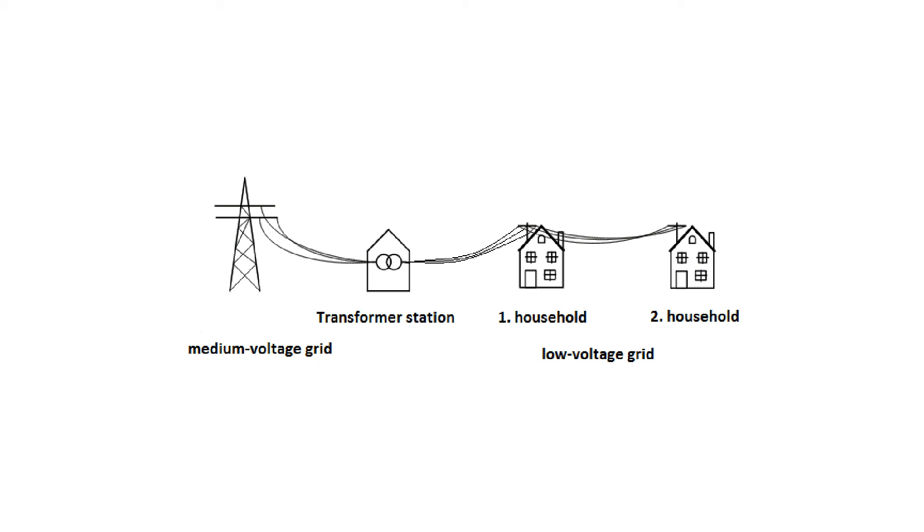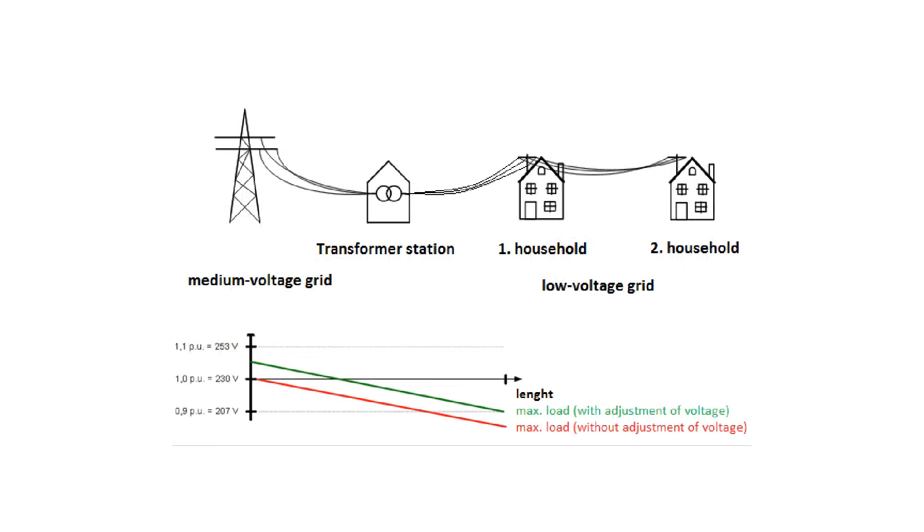All components are connected parallel to each other to function independently. In the real case and without private photovoltaic systems, the voltage is at the transformer's highest and falls even further due to line resistance with increasing distance from the transformer. In the end, all households have a different voltage applied.